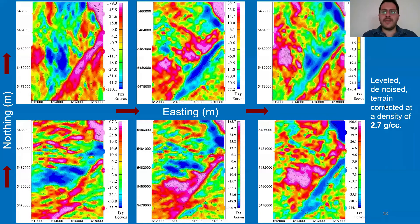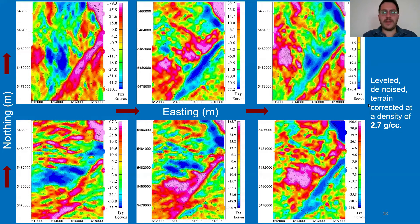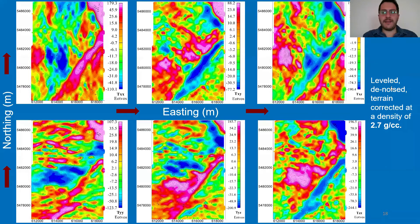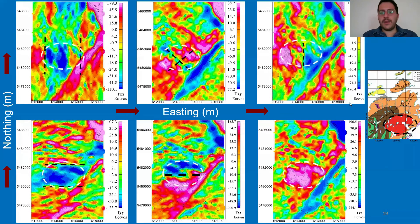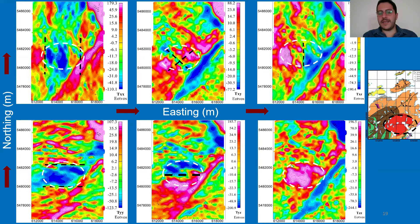Here are the maps of the six components from airborne gravity gradiometry data that are leveled, denoised, and terrain corrected at a density of 2.7 grams per cubic centimeter. If we recall our geological map of the survey area, we can see from the Tzz that it directly delineates the gabbro intrusion from the survey area.